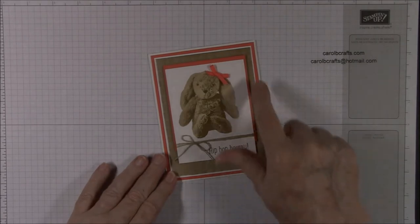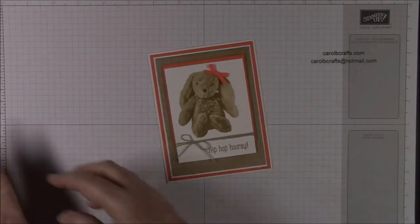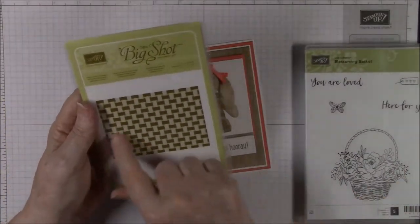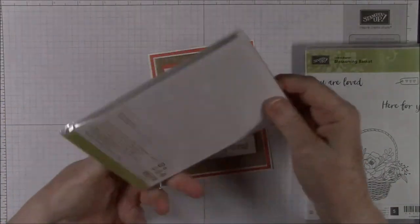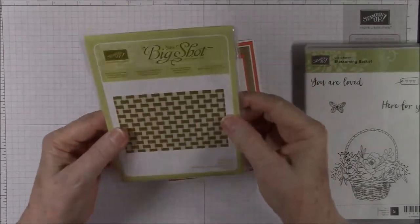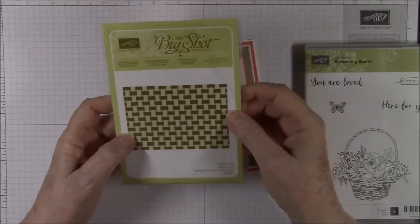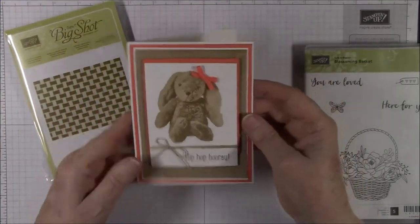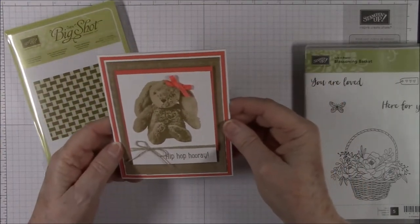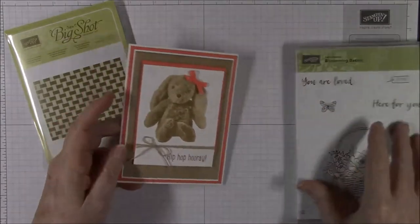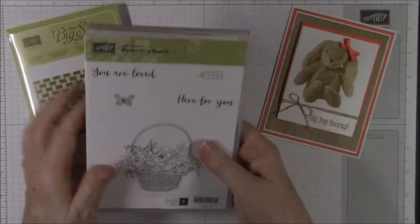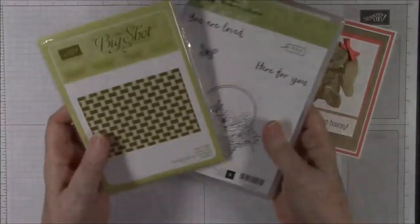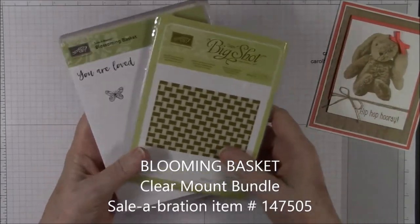Now I used a special folder for this basket weave. I used the new Basket Weave Dynamic Folder. It's one of those where you only have to use one acrylic plate instead of two with your Big Shot. And I'm just in love with that. It's great for the Easter season and spring when we're using a lot of baskets and flowers. And it's not available in the catalog right now. The only way you can get it right now is to get it through the Sale-A-Bration program.